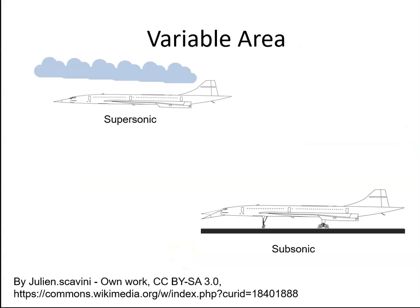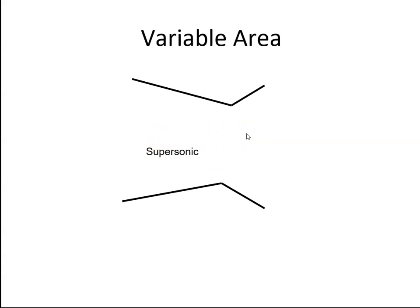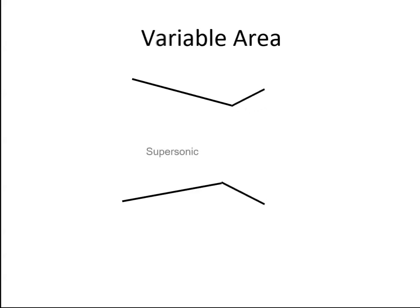The obvious question is what happens when a supersonic aircraft is in subsonic phases of flight. For takeoff and climb the aircraft might be subsonic, in the cruise it would be supersonic, and for descent and landing it returns to subsonic again. For subsonic flight we want a convergent nozzle, and for supersonic flight we want a convergent-divergent nozzle. We can achieve both by using a variable area nozzle — convergent for subsonic flight and convergent-divergent for supersonic flight. At takeoff we are subsonic, in cruise we are supersonic, and on descent and landing we are back to subsonic again.